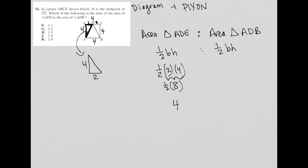Now, the same thing with triangle ADB. For ADB, still 4, 4, 4, 2, and 2. ADB, the base is 4. So I have one half times 4. And the height, which I draw here, well, that height is also 4.